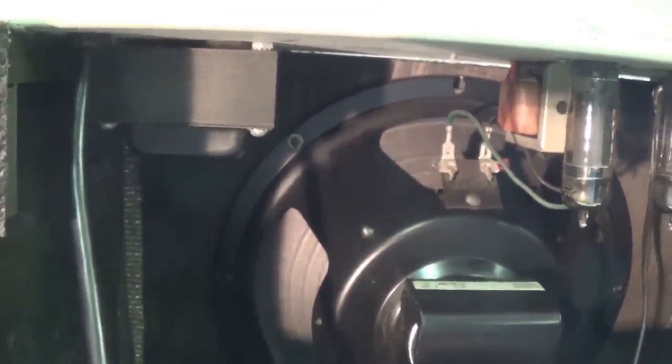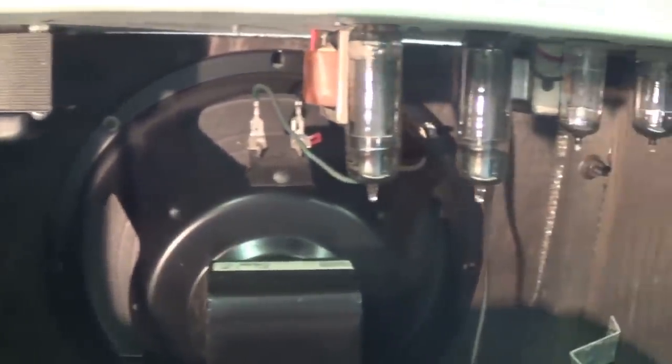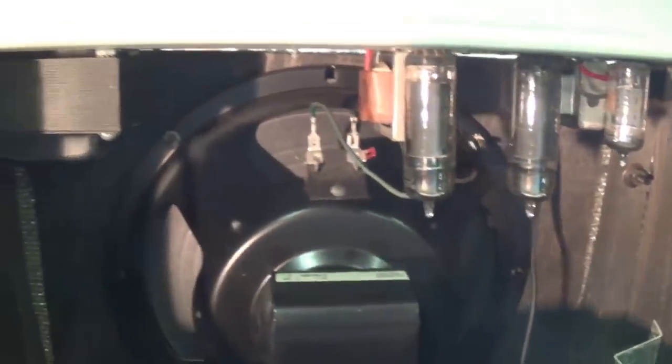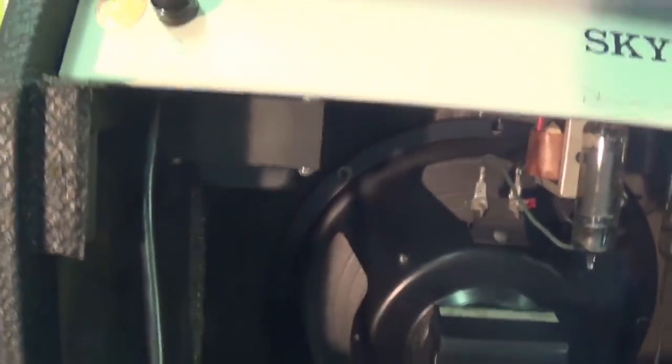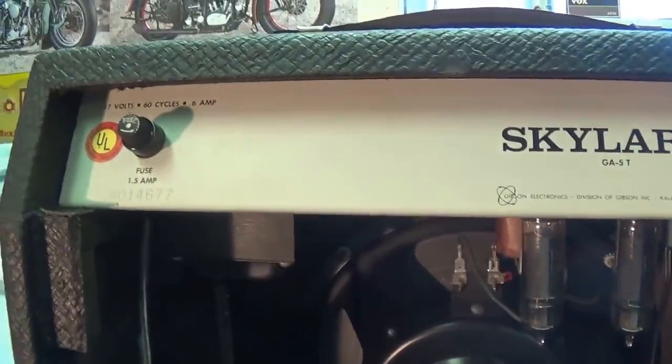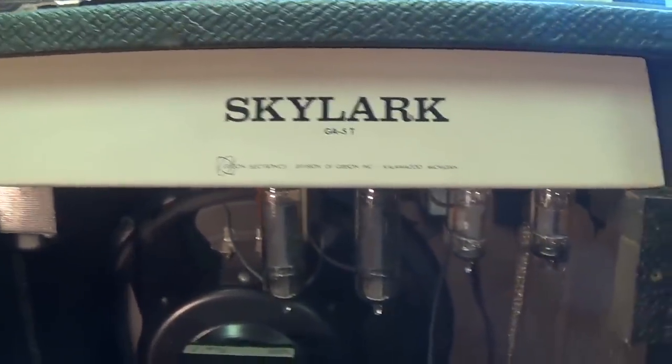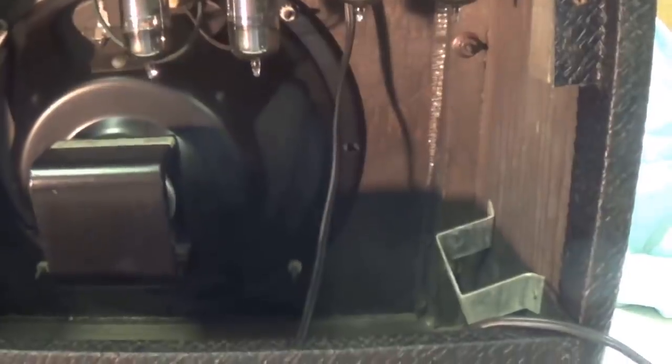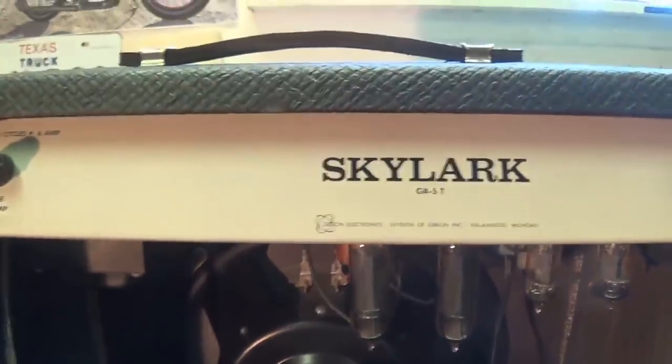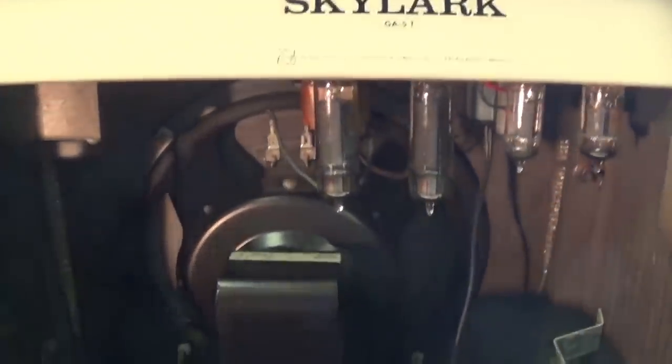The tube complement is on the positive side with two 6BQ5s, a 6C4 as a second preamp tube, and a 6EU7 as the first preamp tube and tremolo oscillator. This particular circuit uses this little transformer back here as an interstage phase inversion transformer, which is rather unusual. This circuit on the whole is rather unusual, and when we review it on the schematic, you'll find some very interesting things.